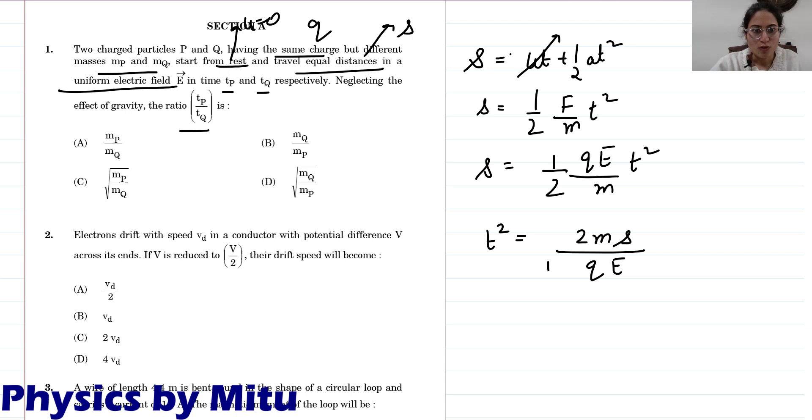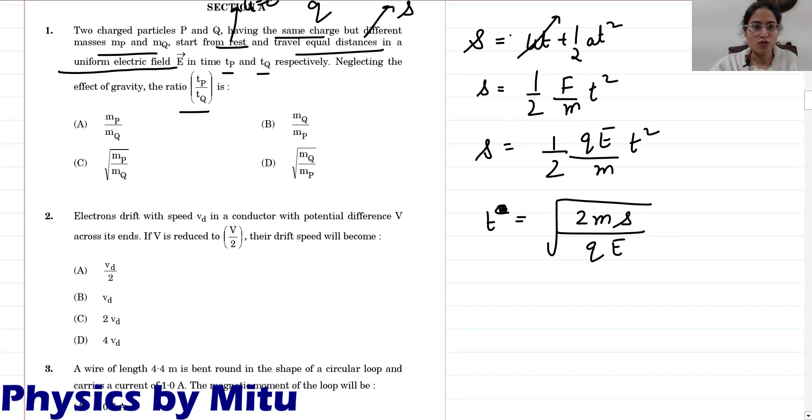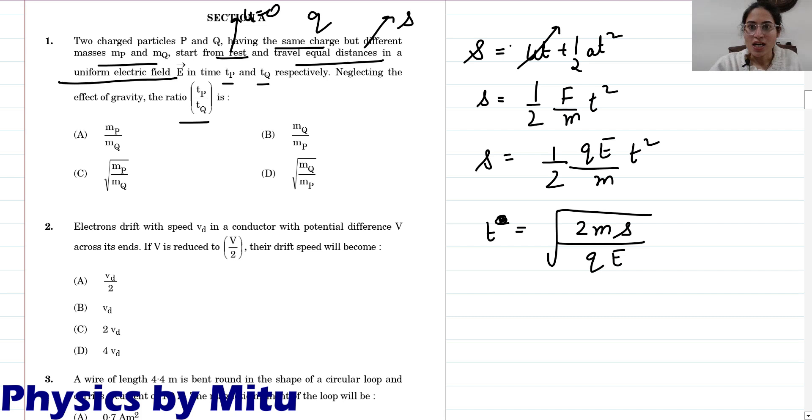Now we find tp by tq. You can see which terms will cut - two will cut, and both have same distance, same charge, same electric field.